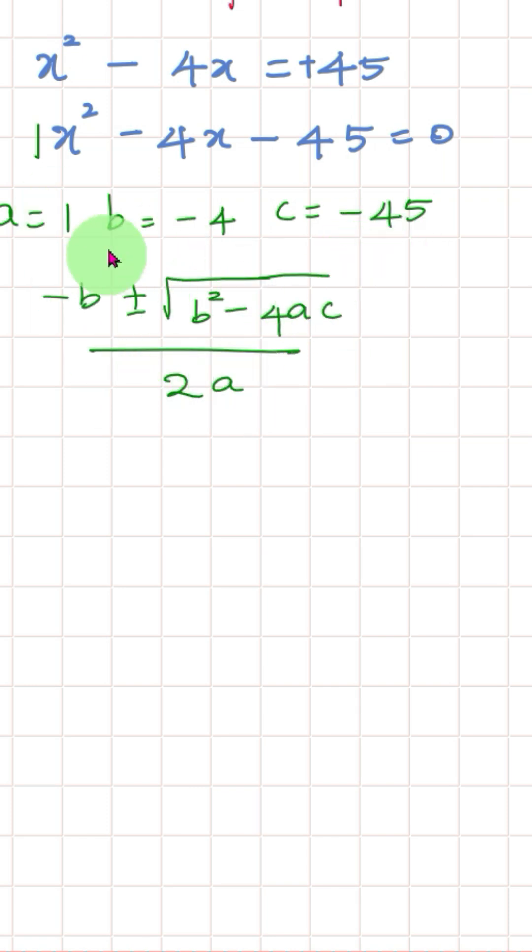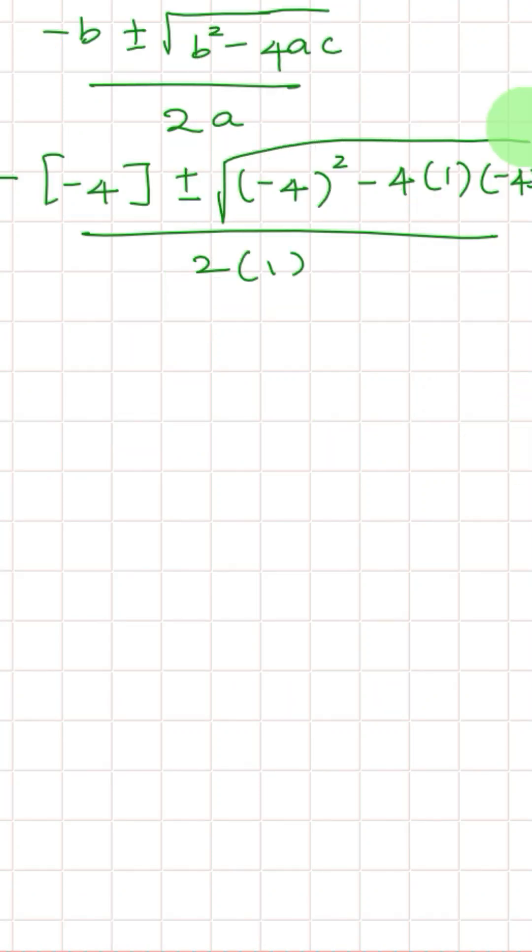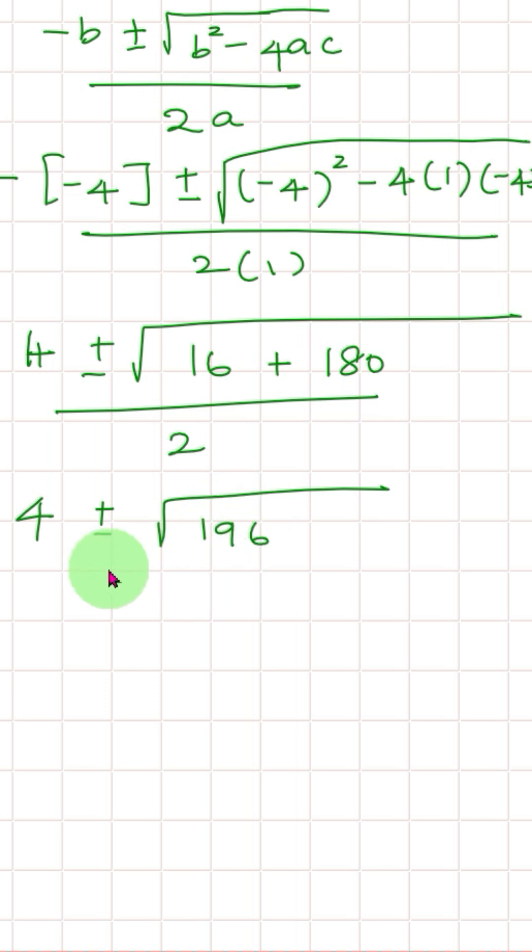With all the values, substitute. Minus b value is minus 4 plus or minus b square, that is minus 4 square. Minus 4 into a is 1, c is minus 45. So 4 plus or minus, 4 square is 16, minus into minus plus. So 4 plus or minus square root of 16 plus 180 divided by 196 divided by 2.